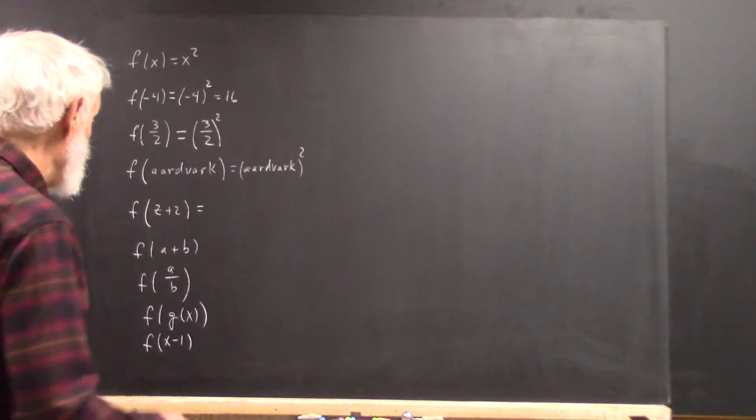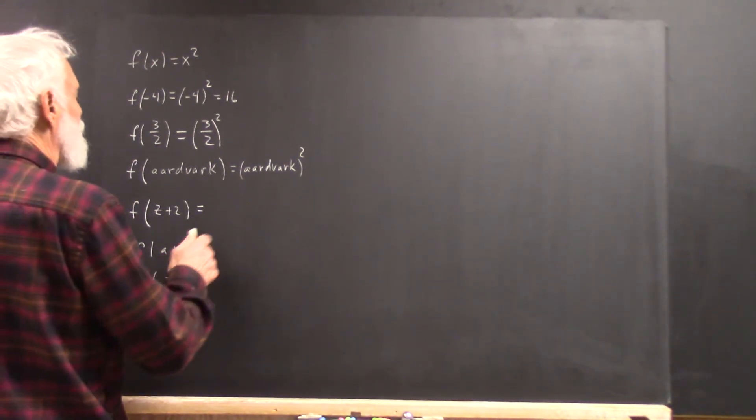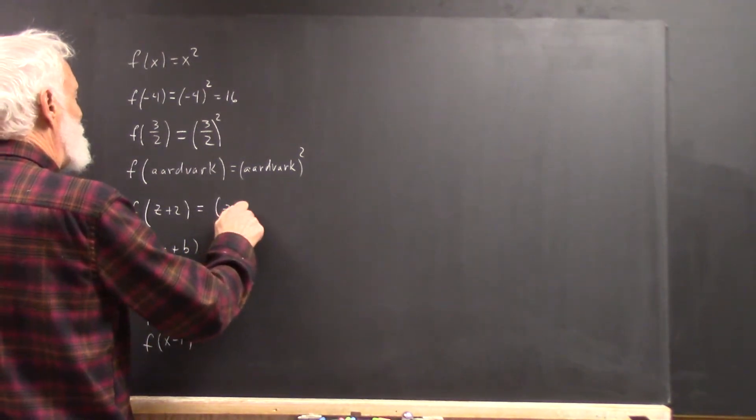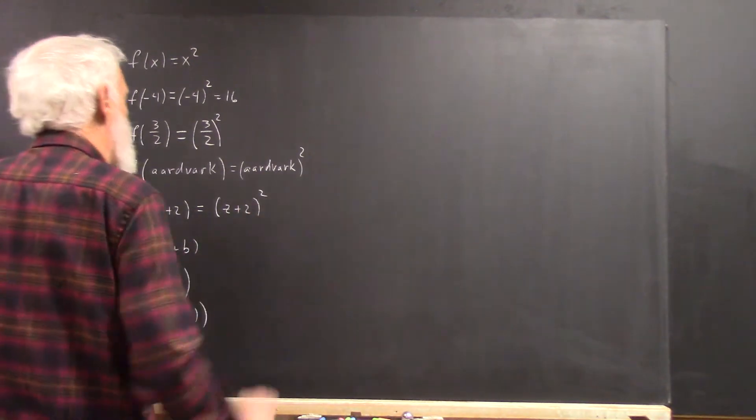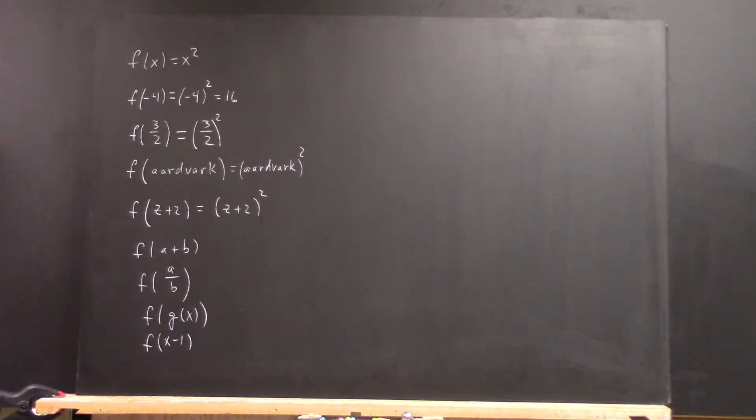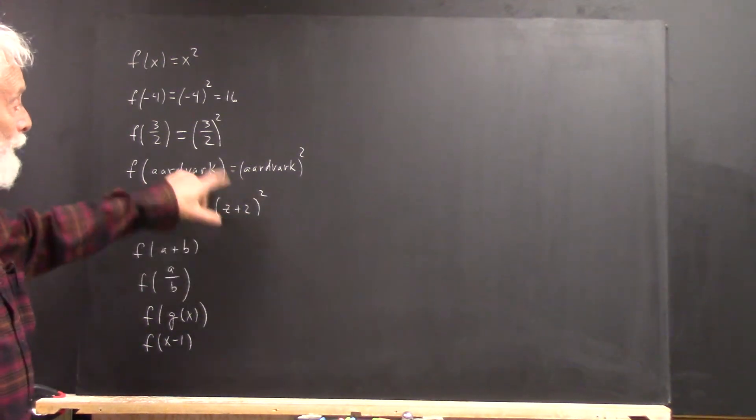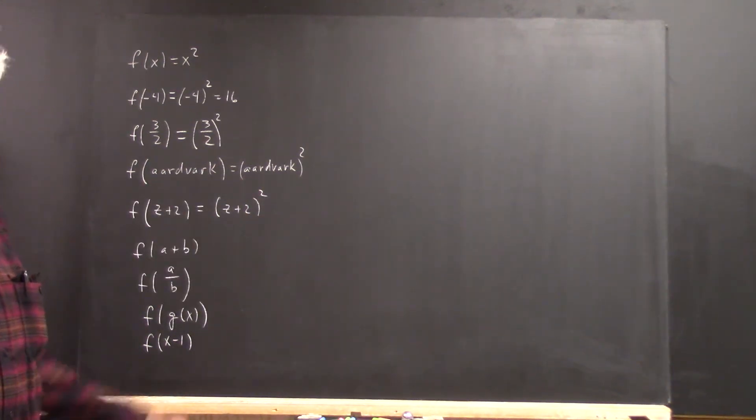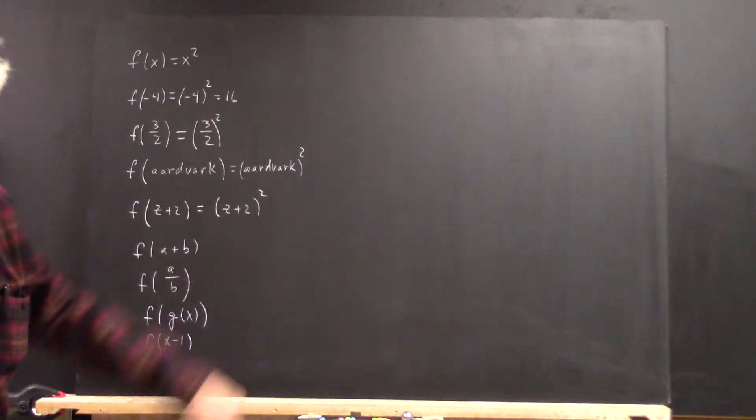People do pretty well with that. But okay, so z plus 2 quantity squared, right? Not z plus 2 squared, parentheses z plus 2, in parentheses squared.